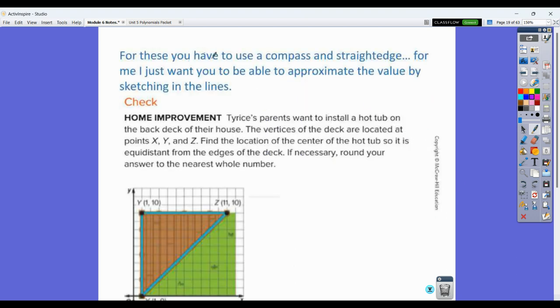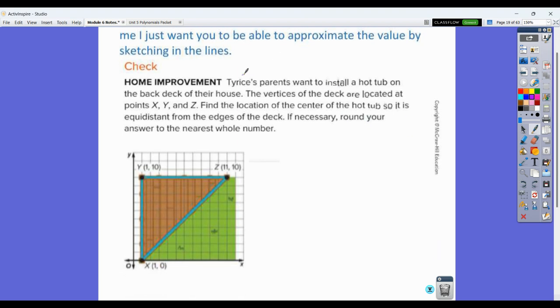For these type of problems, you actually have to use a compass and straight edge, which we're going to get into after the break. But for me, I just want you to be able to approximate the value by sketching the lines for this one. So if we look at this problem, it says Tyrese's parents want to install a hot tub on the back deck of their house. The vertices of the deck are located at the points X, Y, and Z. Find the location of the center of the hot tub so it is equidistant from the edges of the deck. If necessary, round your answer to the nearest whole number. So we want to go equidistant from the edges of the deck, and what we know about that is that the equidistant from the edges or from the sides of the deck is going to be the incenter. So we want to find the incenter, which is made up of the angle bisectors.